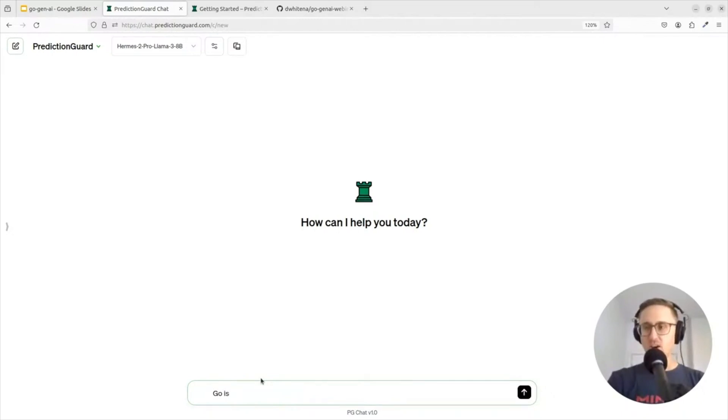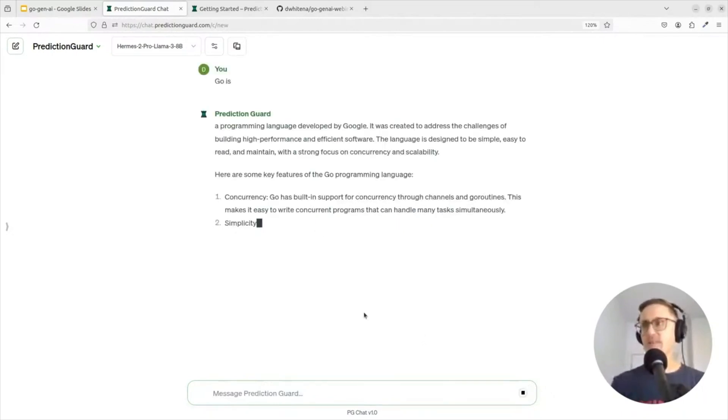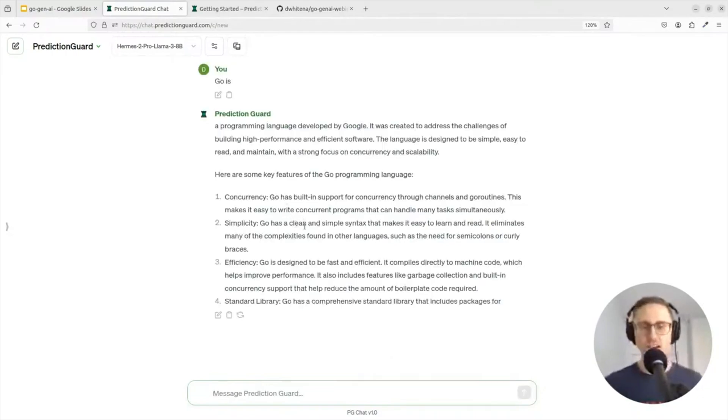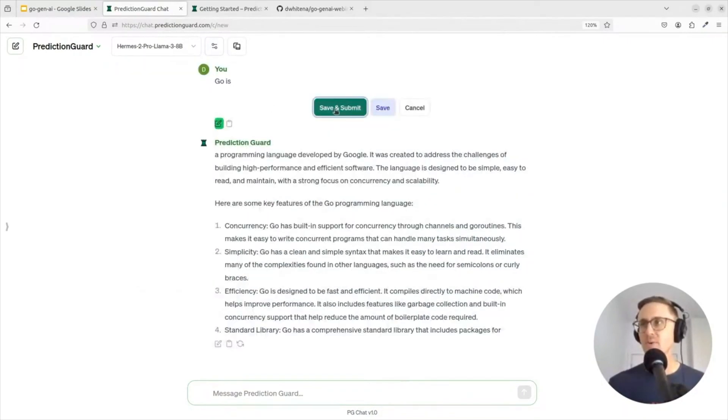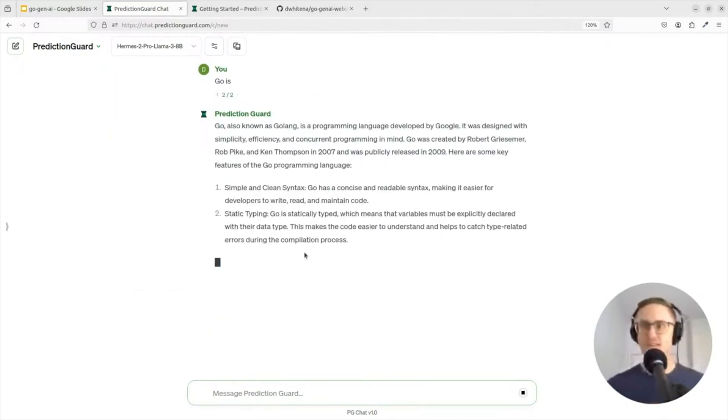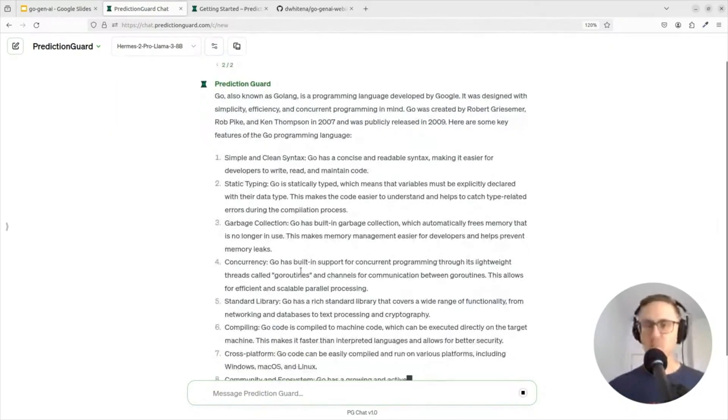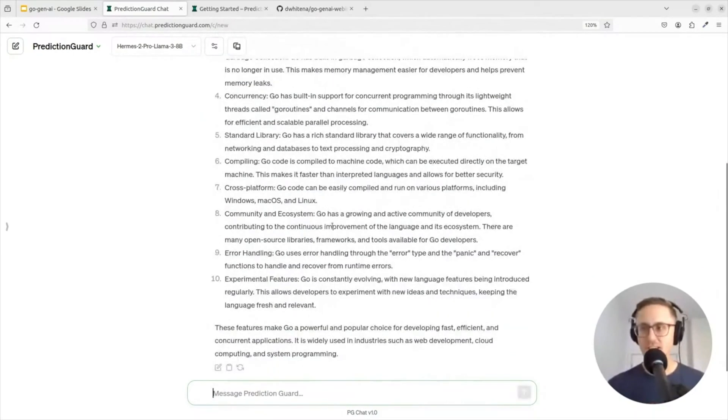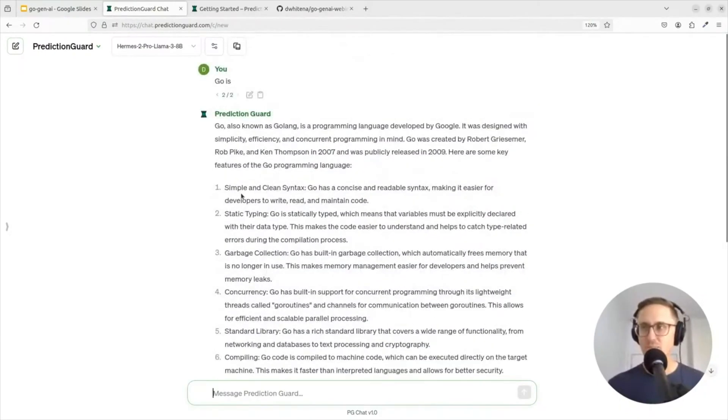I'll say 'Go is' something, and you can see the kind of standard thing that you might get from any sort of—looks like it truncated there, let's just change the setting. I'll rerun this. You can see the standard thing that you might get from a ChatGPT-like interface, maybe some good information about Go. Go is a programming language. So what's actually happening under the hood here?